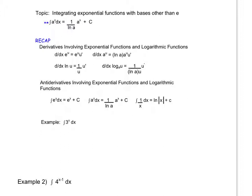So let's look at a couple examples using this new formula here where we have an integral of a base other than e. So if I have the integral of 3 to the x, notice my a is 3. So this will become 1 over ln of 3 times 3 to the x plus c, which is the same thing as just 3 to the x over ln of 3 plus c.